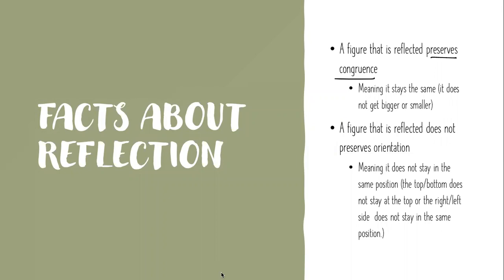But when you reflect something, your left eye looks like your right eye, and words on a shirt are backwards. That's because reflection does not preserve orientation — it's not in the same position anymore. If I reflect across the x-axis I'm upside down, so I don't stay in the same position.